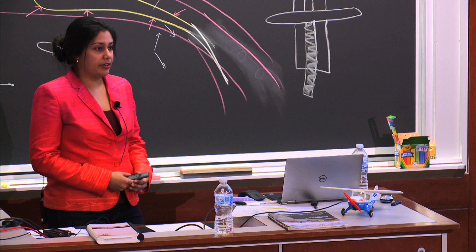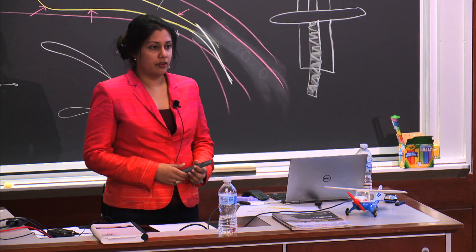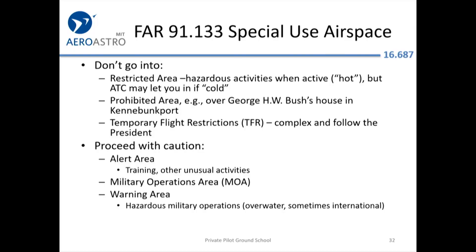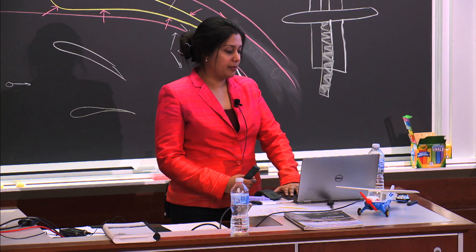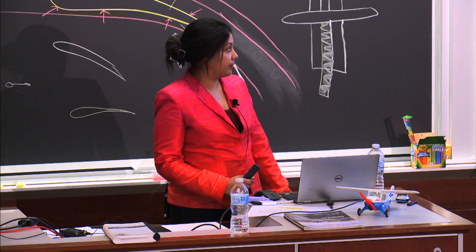So restricted areas: some are hot or active, some are cold and not active — you only have to avoid them if they're hot. There are also alert areas, military operation areas, and other warning areas where you just have to proceed with caution but are allowed to enter. You just want to be especially alert when in those spaces. The one you're most likely to encounter is very close to Minuteman Airport, just west of Hanscom — there's a small area there that's not usually active but is one to keep an eye out for.